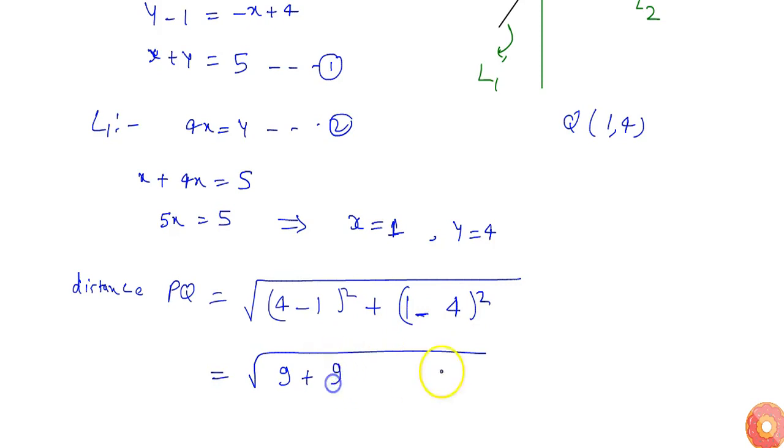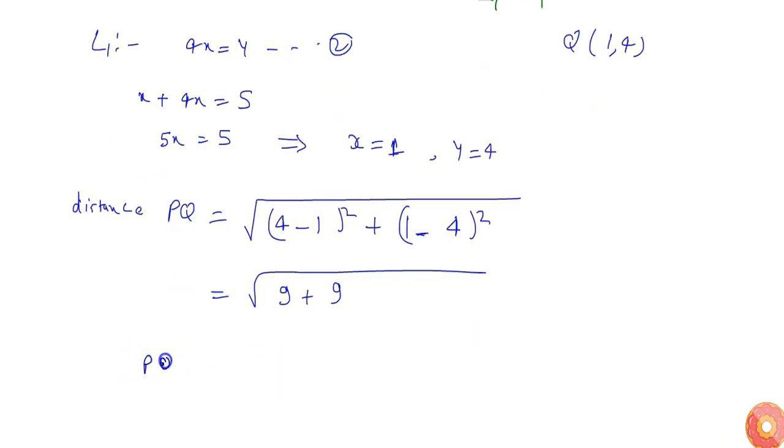Plus 1 minus 4 which is minus 3, minus 3 squared will be 9. So distance PQ will be under root 18, or I can say 3 under root 2. So PQ will be 3 under root 2.